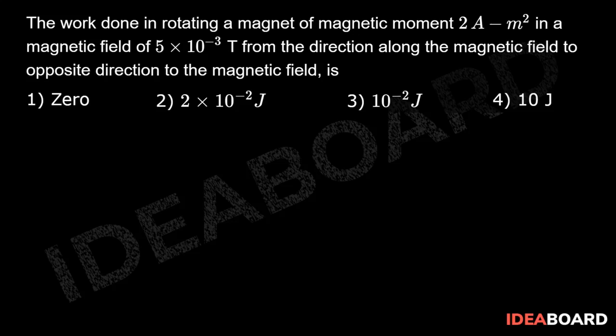Generally work done to rotate the dipole in the uniform magnetic field is equal to the expression MB into 1 minus cos theta.